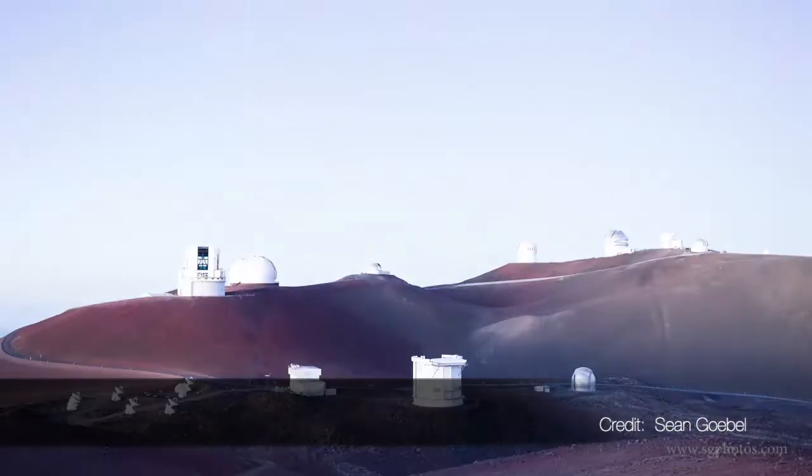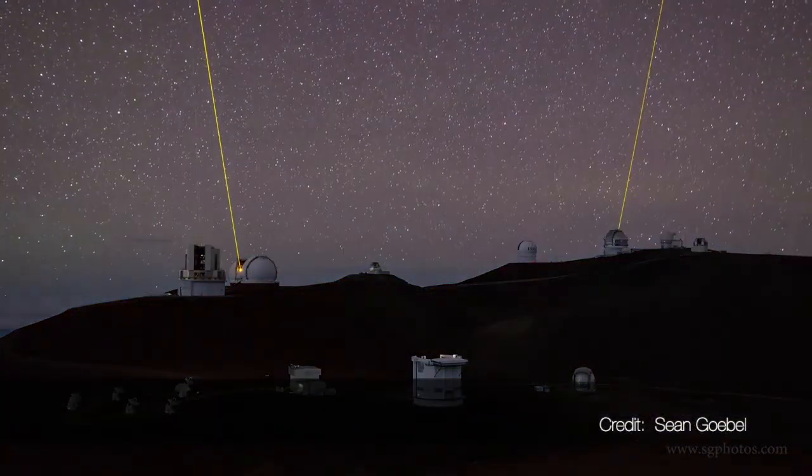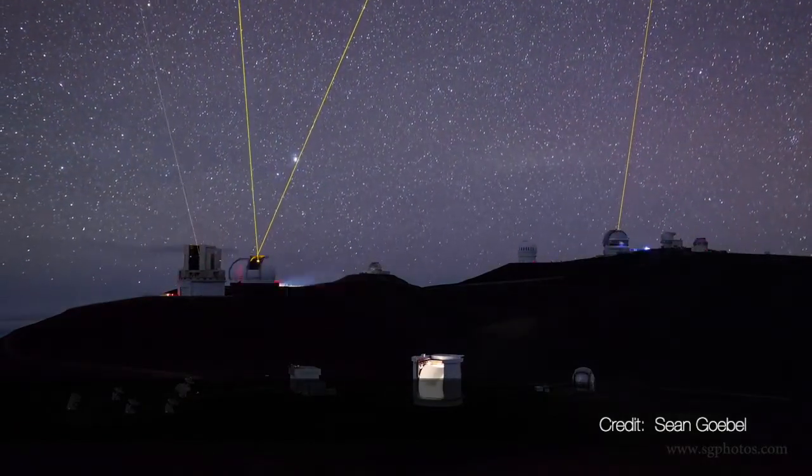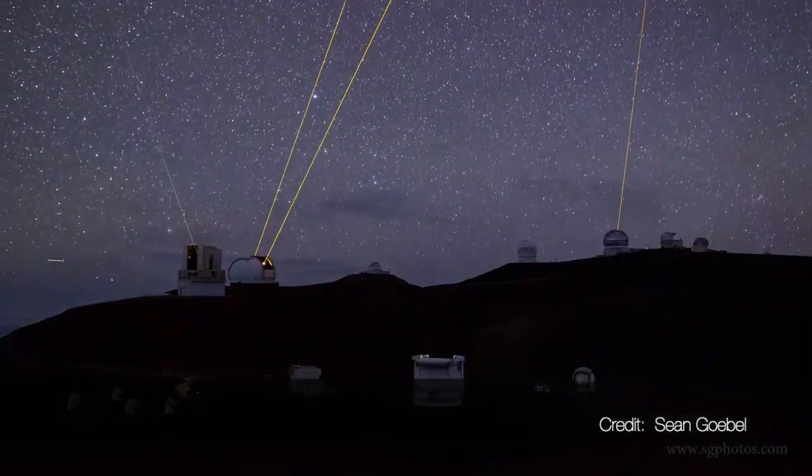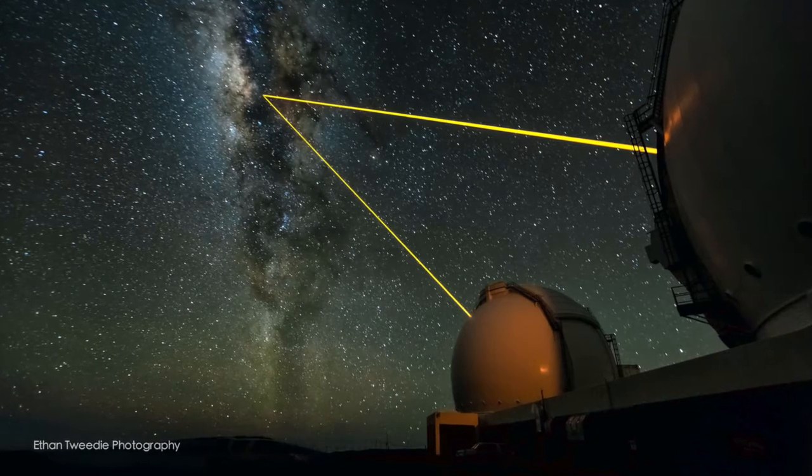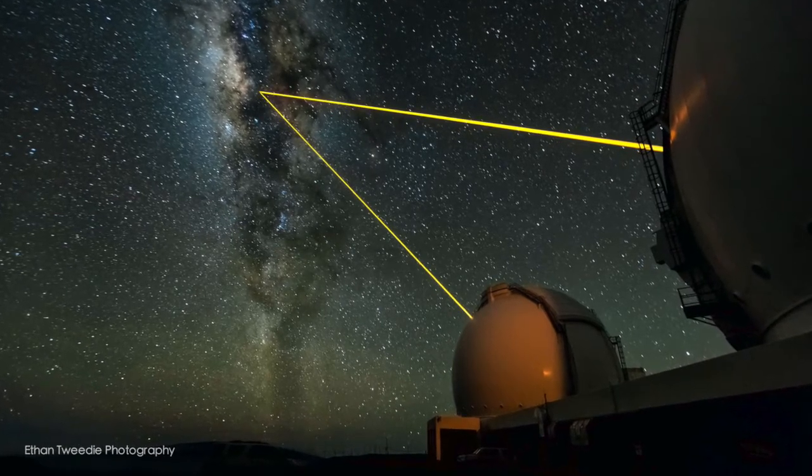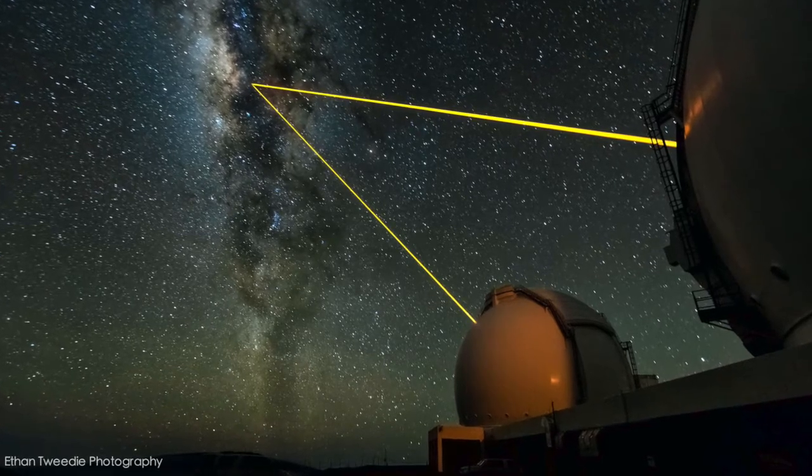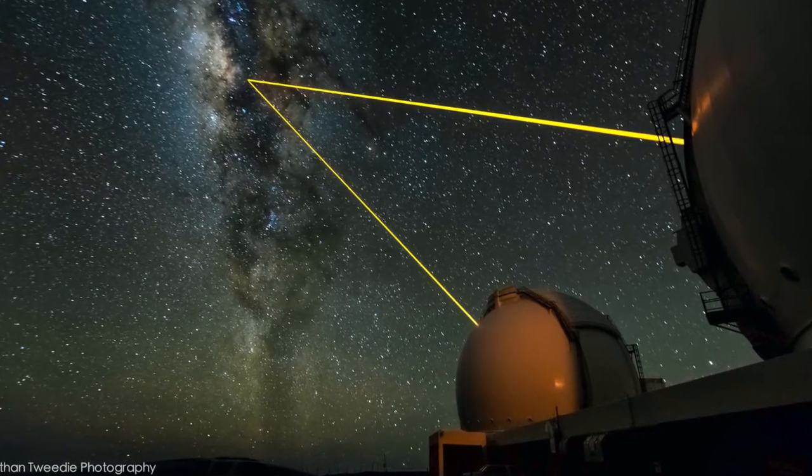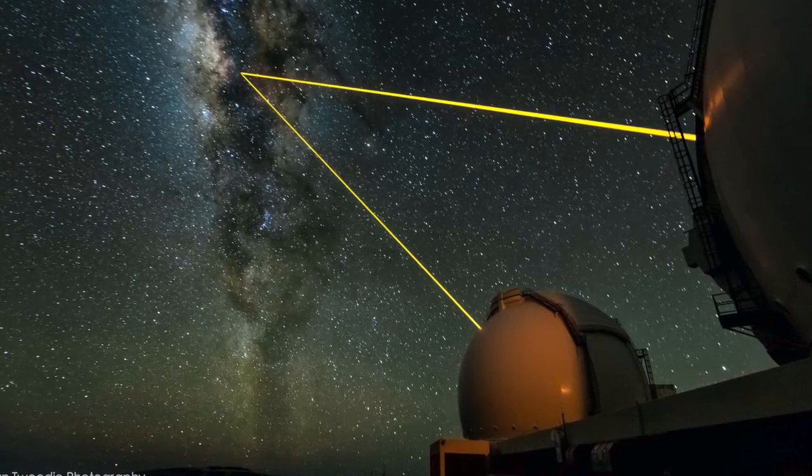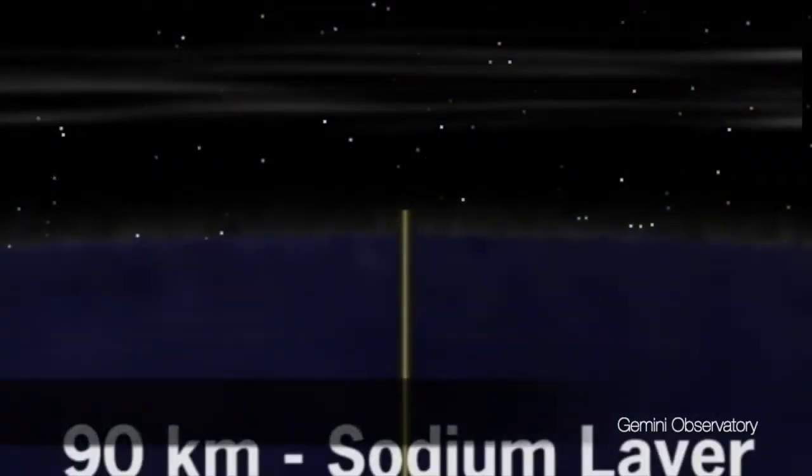The biggest laser show on Earth! Here you can see a beautiful video of the world's largest telescopes at the world's greatest observatory on top of Mauna Kea, a 14,000 feet dormant volcano on the island of Hawaii. It is beautiful to watch this show, but what do the lasers have to do with astronomical observations? These lasers are a key part of the breakthrough technology called adaptive optics. This method is shown in this video created by Gemini Observatory.